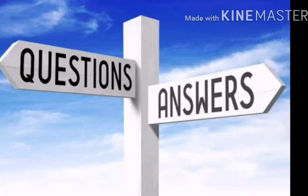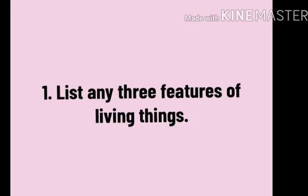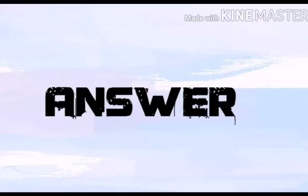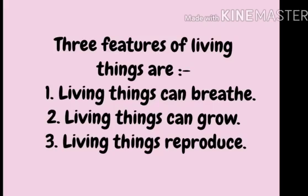Now I shall give you the answers of this chapter. Question number 1: List any 3 features of living things. Answer: 3 features of living things are — Number 1: Living things can breathe. Number 2: Living things can grow. Number 3: Living things reproduce.